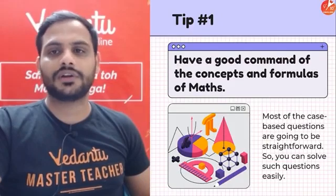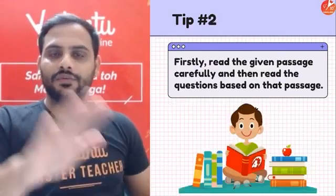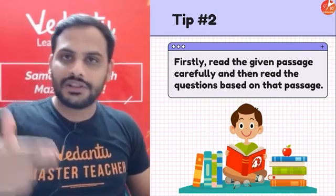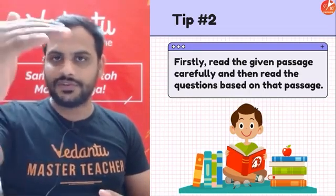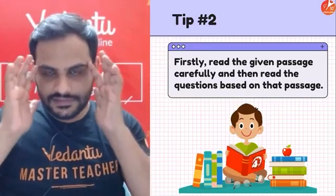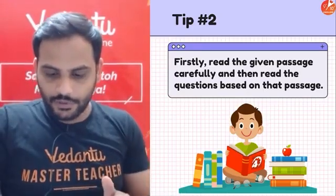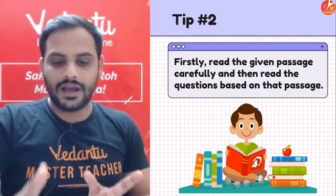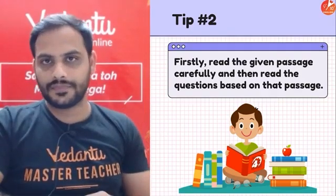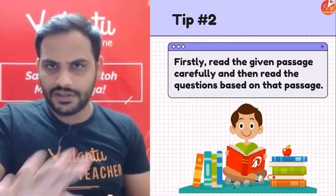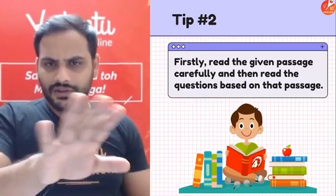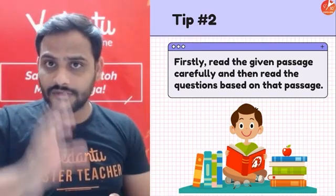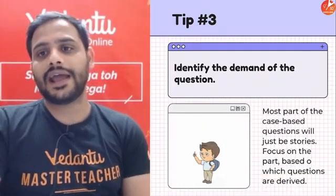Tip 2: Whenever you start a case study based question, first read the whole case study passage quickly to get an idea of what it's about. Then read all the questions. Once you've read all the questions, go back to the case study and see how the questions are related to it. First look at the case study, understand which chapter it's from, then check the type of questions, then read the passage carefully.